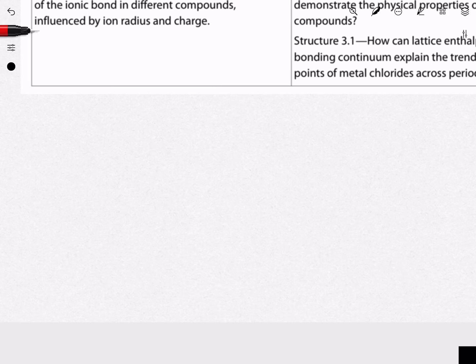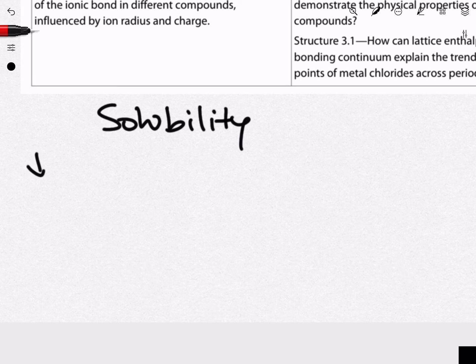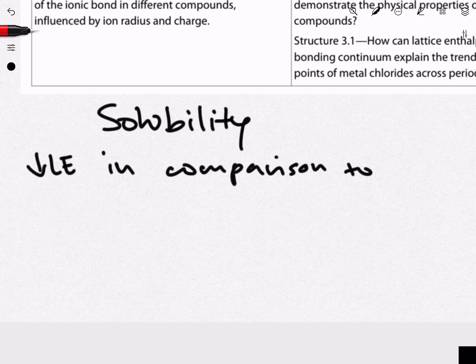The final property that we will have to be looking at today is solubility. Solubility refers to the ability of a substance to dissolve in a liquid to form a solution. In terms of our lattice enthalpy, what we need to know specifically is that a low lattice enthalpy, in comparison to the enthalpy of the solution in which we want to dissolve it in, will lead it to dissolve. This means that for something to dissolve in a solution, it needs to have a relatively low lattice enthalpy in comparison to it, or else it will not dissolve and form a solution.